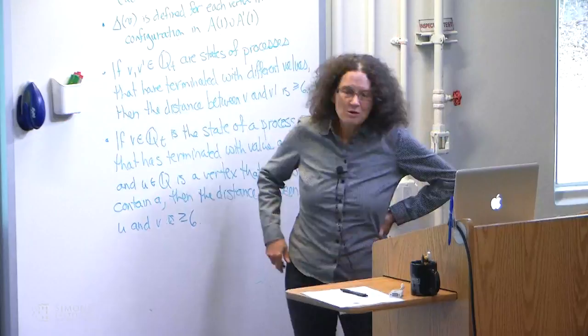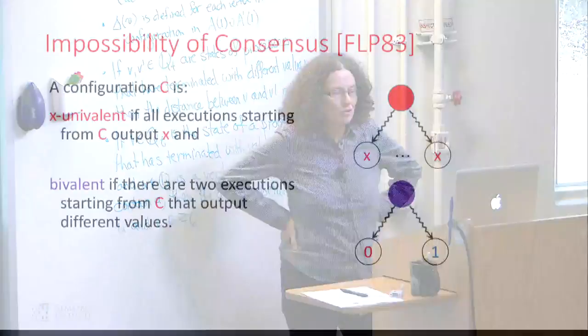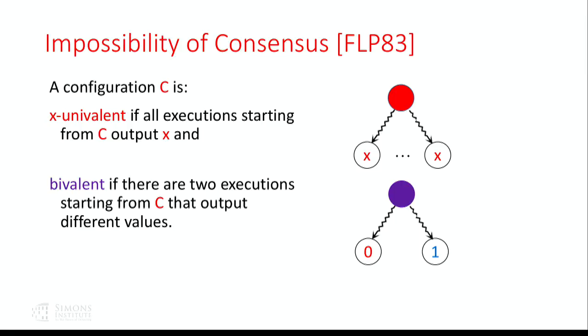In the boot camp, I proved that consensus is impossible in an asynchronous system of two or more processes that only communicate using reads and writes, using a valency argument. A configuration is x-univalent if all executions starting from configuration c output x. A configuration c is bivalent if there are two executions starting from c that output different values — 0 and 1.